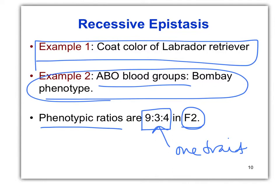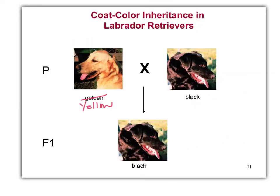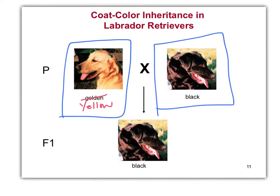Have we seen this ratio in any other examples? No. This is the pattern you're looking for in the F2, one trait. All of these are based on genotypes 9:3:3:1 of two genes, but what the phenotype looks like changes — not the genotypes. So if we have a true breeding yellow lab and a true breeding black lab, two genes contributing to one trait — coat color — in the F1 we get all black. We can't tell anything just from the P to the F1.